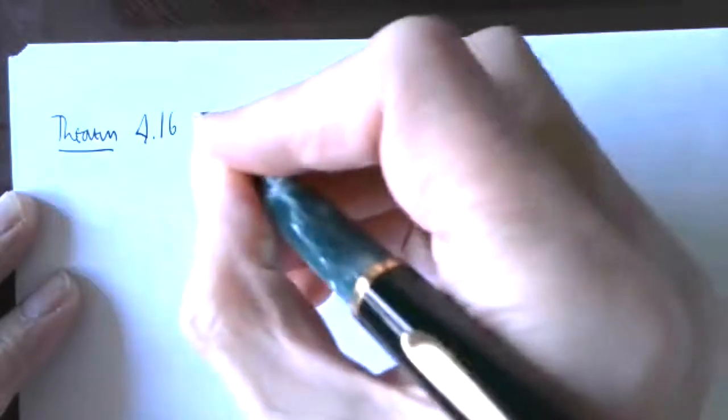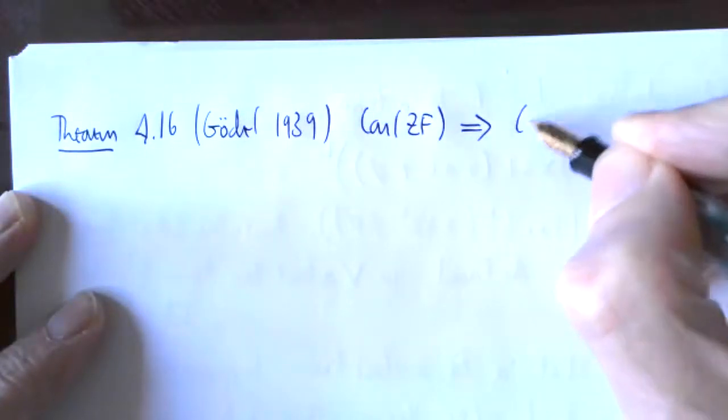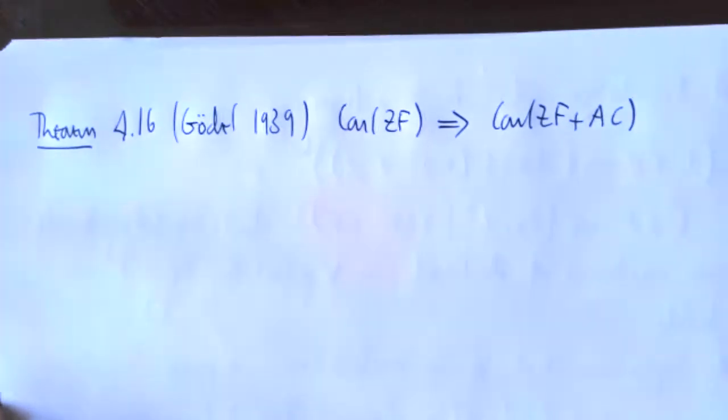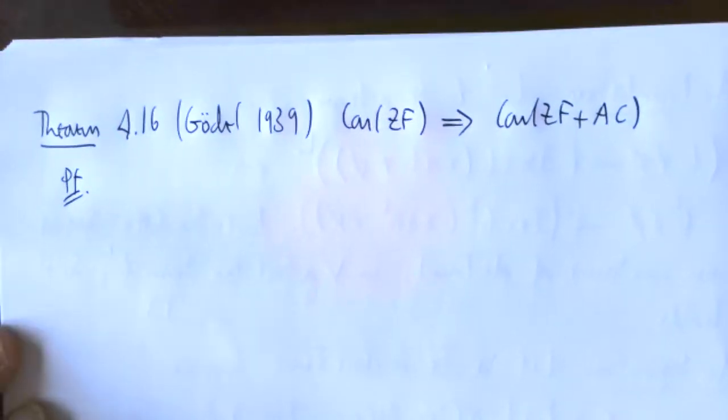So first, relative consistency of AC. This is theorem 4.16 in the notes. Gödel, around 1939, showed if ZF is consistent, so is ZF with the axiom of choice. And actually, it's pretty much the same as for V equals L.